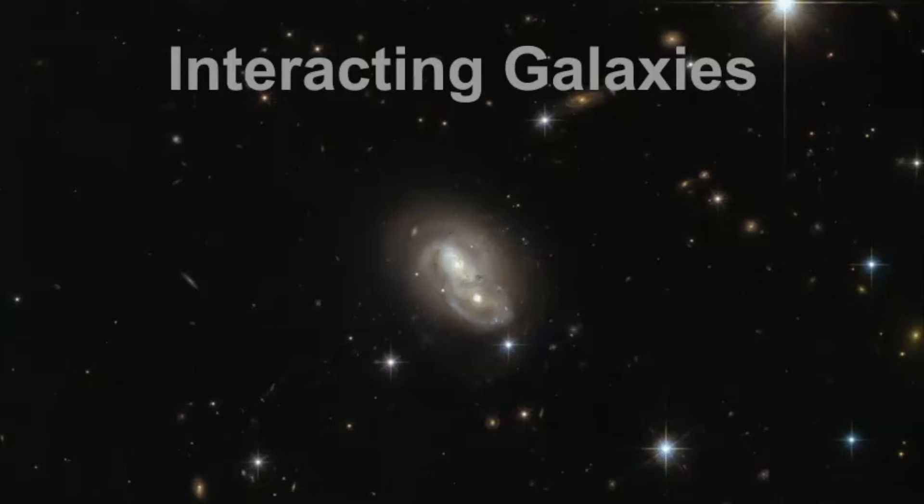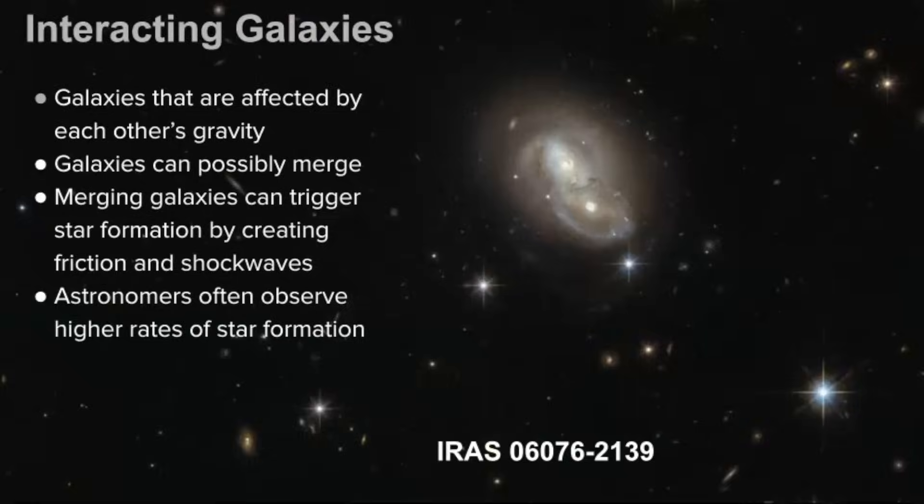The final type of galaxy we will examine in this video are interacting galaxies. These are ones that are affected by each other because of the gravitational pull and influence they have from their proximity to each other. It's possible that some of these interacting galaxies may eventually merge, which can trigger higher star formation. It creates friction between the gas that exists all throughout the galaxy.